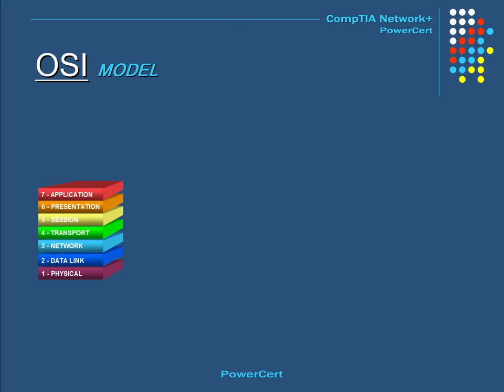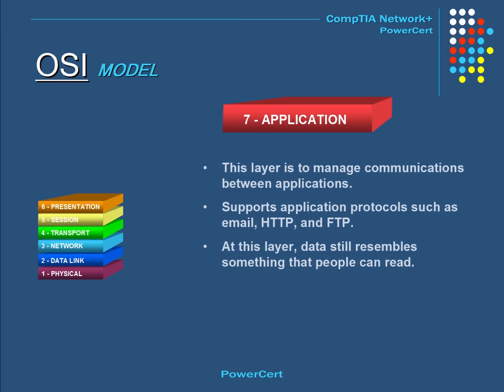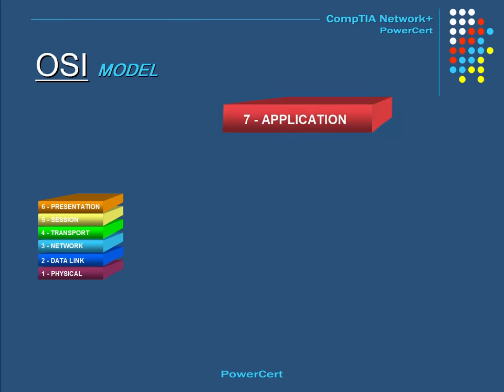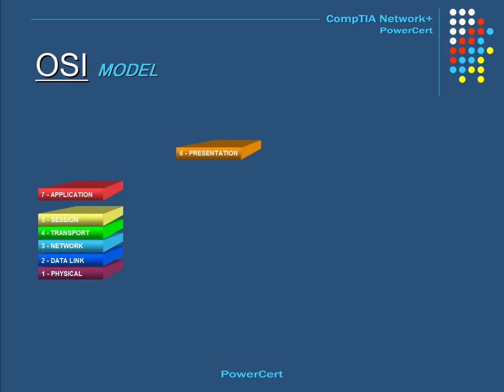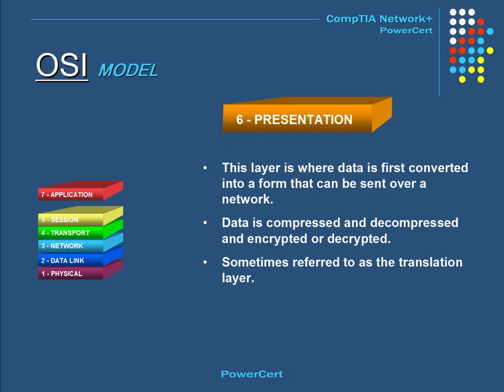The top layer of the OSI model is the application layer. This layer deals with applications and manages communications between them. It supports application protocols such as email, HTTP, and FTP. At this layer, data still resembles something that you can actually read. The presentation layer is where data is first converted into a form that can be sent over a network. Data is compressed or decompressed and encrypted or decrypted. This layer is sometimes referred to as the translation layer.